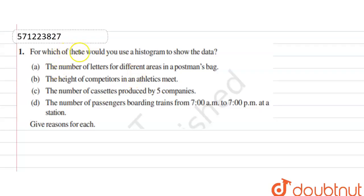Hello guys, the question is for which of these would you use a histogram to show the data. The first part is the number of letters for different areas in a postman's bag.